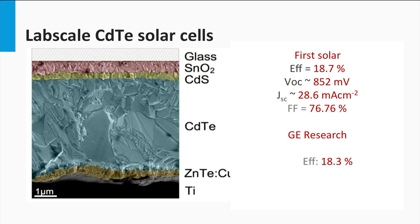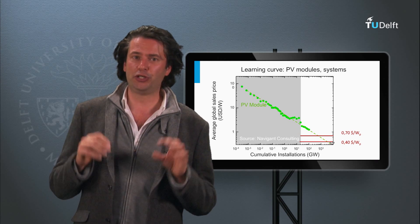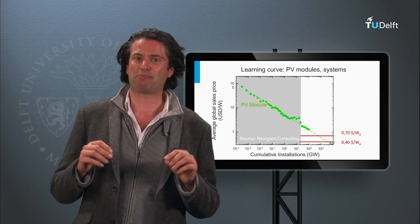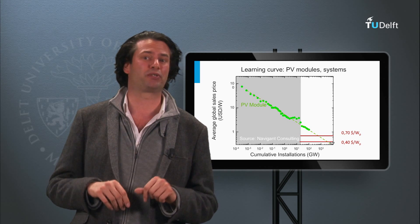General Electric achieved in the same year an efficiency of 18.3%. NREL has confirmed a new record conversion efficiency for a cadmium telluride solar module of First Solar of 16.1%.